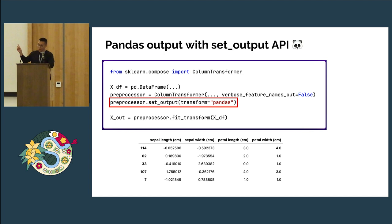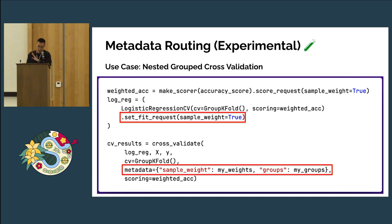I worked on this for around three to four years with different APIs. This allows Scikit-learn transformers to output Pandas DataFrames. There's an API for it called set_output. It works and it's great.